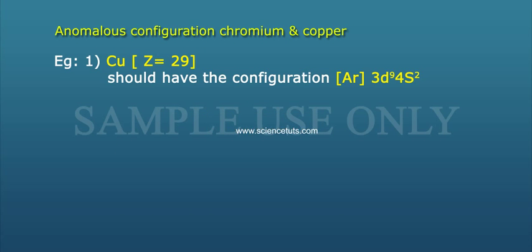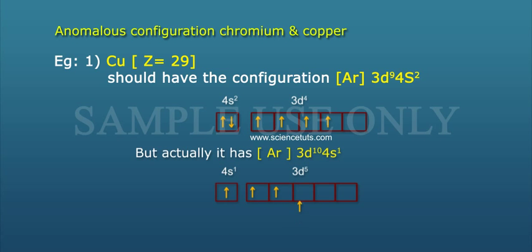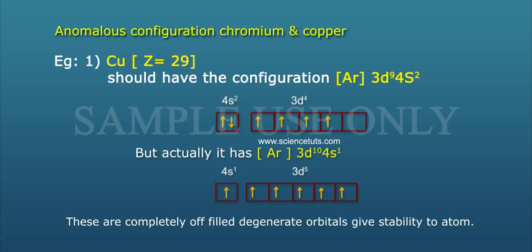Example 2: Copper, atomic number Z equals 29. It should have the configuration [Ar] 3d⁹ 4s², but actually it has [Ar] 3d¹⁰ 4s¹. This configuration gives completely filled d orbitals and a half-filled s orbital.